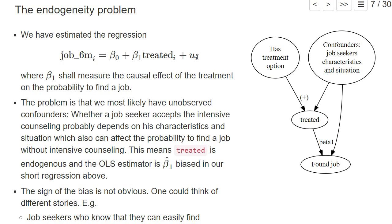So this basically means we have in this error term u_i those characteristics of the job seeker that affect the decision to accept the treatment, but also that directly affect the probability to find a job. So in this regression, our treated_i explanatory variable is endogenous.